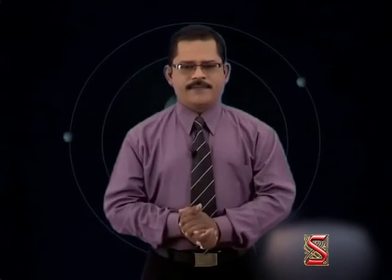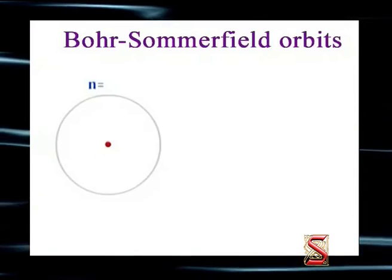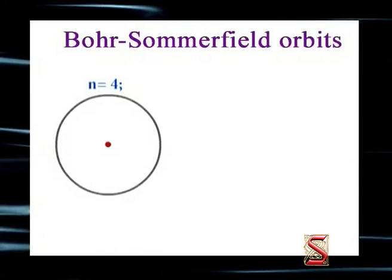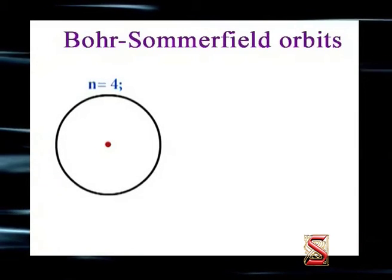The smaller the value of K for any given N, the greater is the eccentricity of the elliptical orbit, and thus it penetrates more deeply into the core of the atom. Let's look at the animation for Bohr-Sommerfeld orbits for different values of N and K, and observe the variation of ellipticity with K for a given N.